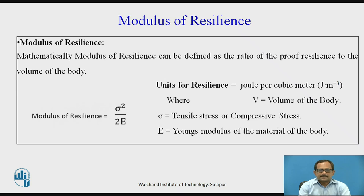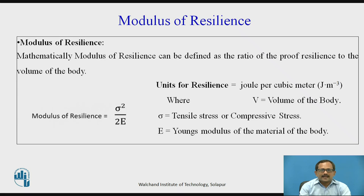Modulus of resilience: mathematically, modulus of resilience is defined as the ratio of proof resilience to the volume of the body. Proof resilience divided by volume of the body equals modulus of resilience, which is given by sigma squared upon 2E. Units of resilience is joule per meter cube, where V is the volume of the body, sigma is the tensile or compressive stress, and E is Young's modulus of the material of the body.